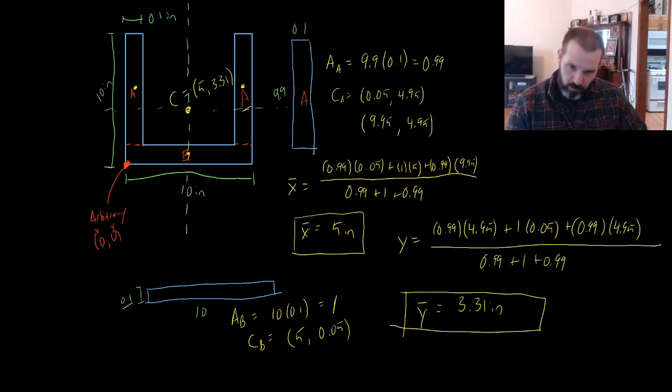All we did was use the rectangular area and the distance to the centroid. You can do this for any common shape. Generally, you're going to be breaking things down into rectangles or circles. For a lot of common shapes, the centroids are already calculated. The centroid is an important thing to be able to find because it lets us know how any type of structural member will behave under loading.